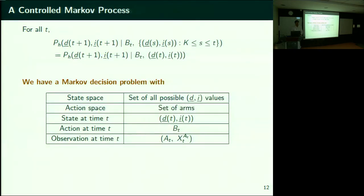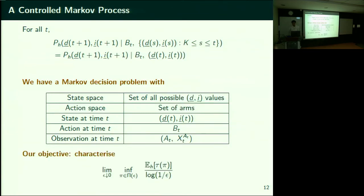The state transitions: your hand trembles, something happens inside and out comes AT, XT, and the system state changes. Apply a new action — the system state changes again — this keeps happening. So we have a Markov decision problem. But in spite of having an MDP, our objective is not the standard MDP objective — our objective is to characterize this growth rate.